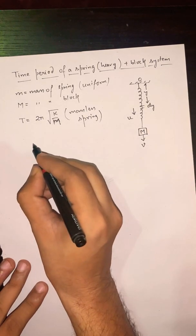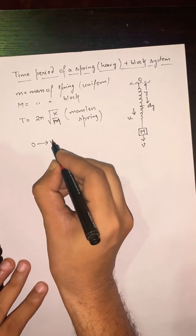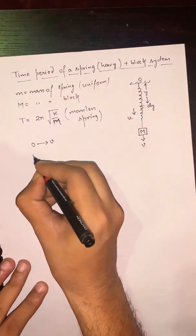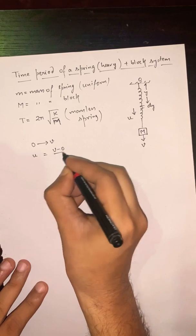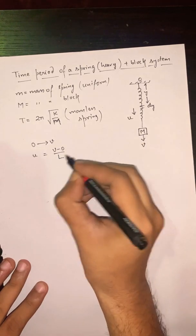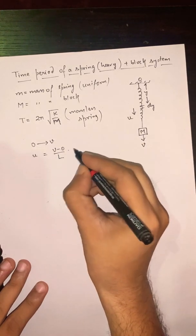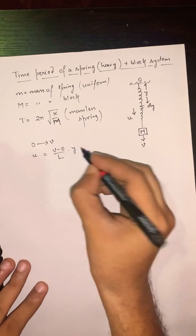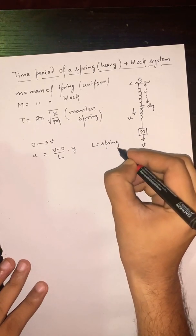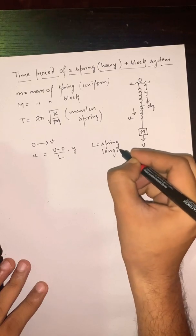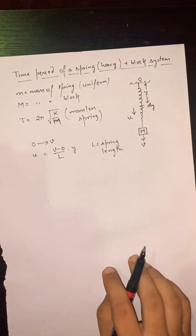The speed increases from zero to V linearly, so at any distance y the speed will be (V-0)/L × y. L is the spring length, we don't need to worry about it changing as it will cancel out eventually.